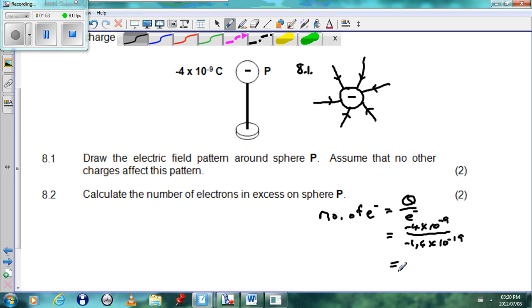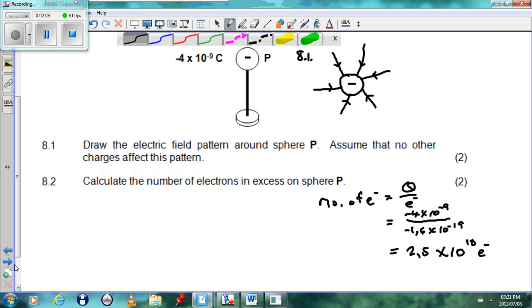And if you take a calculator and we work it out we get an answer of 2.5 times 10 to the power 10 electrons. So that will be the answer for these two sums.